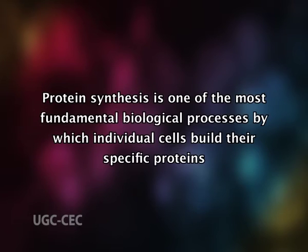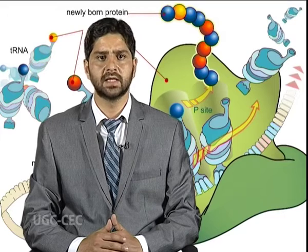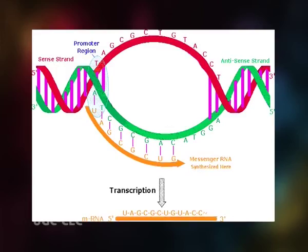Protein synthesis is one of the most fundamental biological processes by which individual cells build their specific proteins. As you have studied earlier, during transcription, the RNA copy of the genetic information encoded in a DNA molecule is produced in the nucleus, and it is called a messenger RNA, that is mRNA.